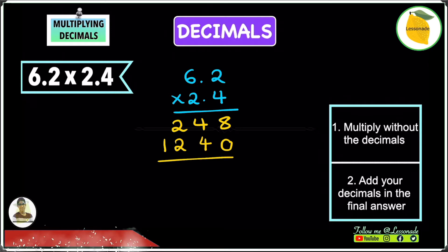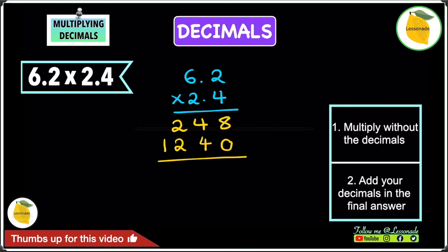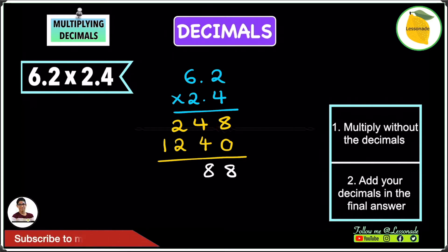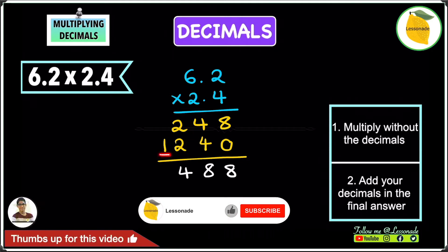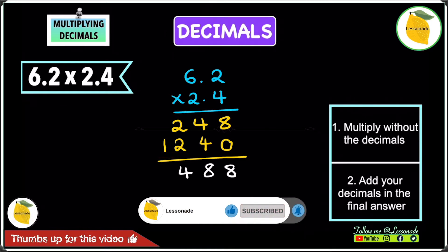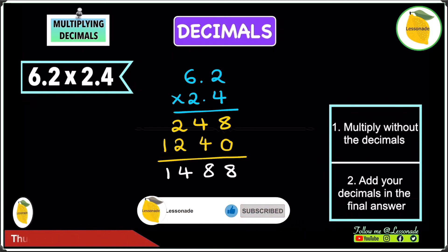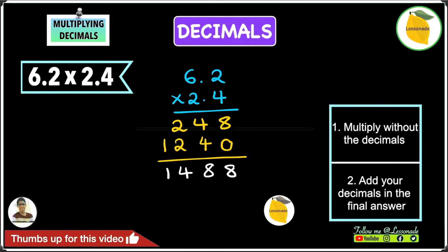Now we can add these numbers up. 8 plus 0 is just 8. 4 plus 4 is also 8. Then we have 2 plus 2, which gives us 4. And finally, we have 1 added to nothing, which results in just 1. So we have an answer of 1488.